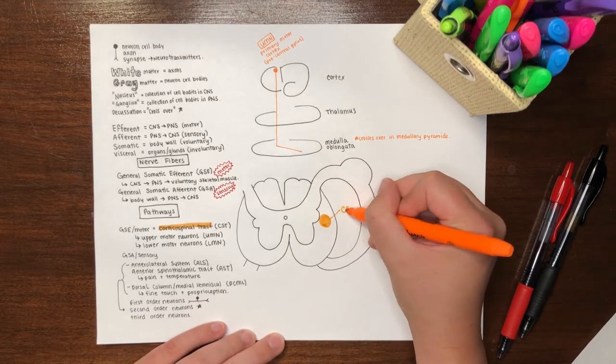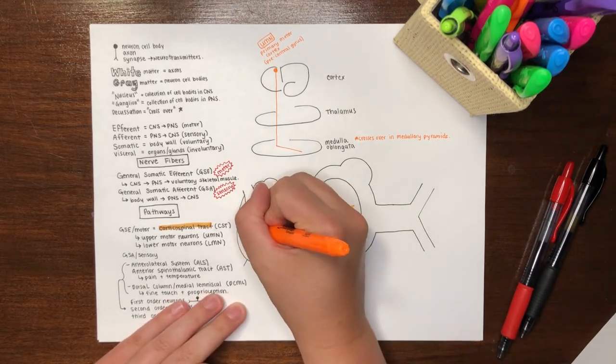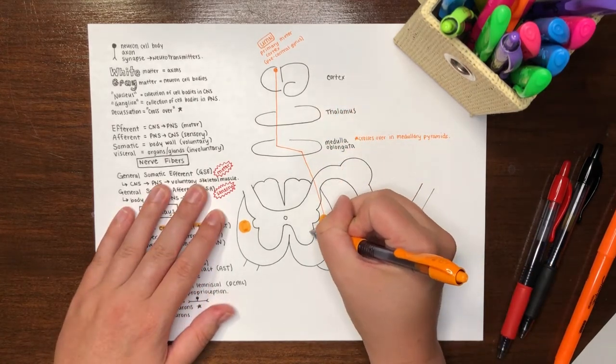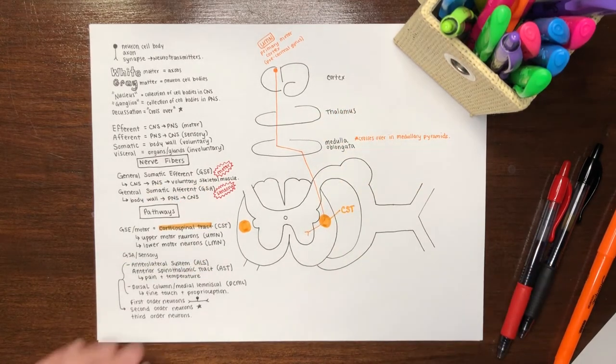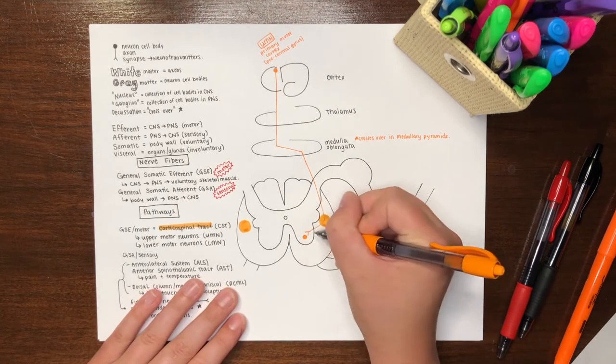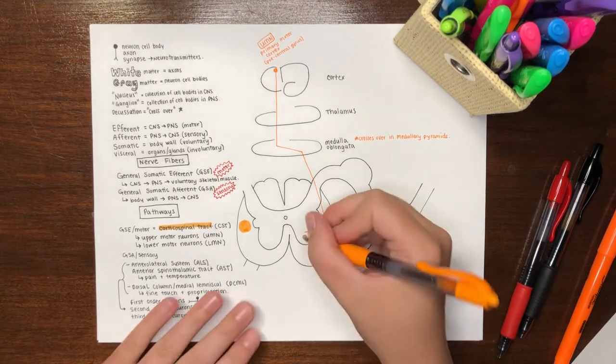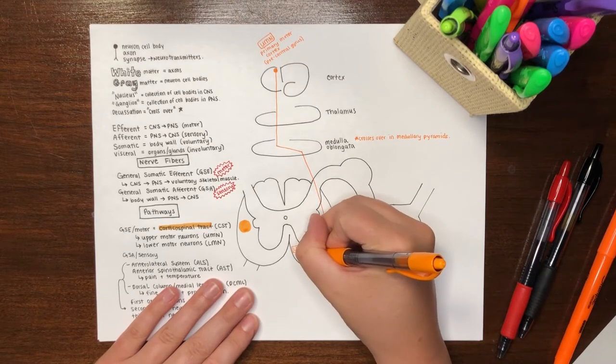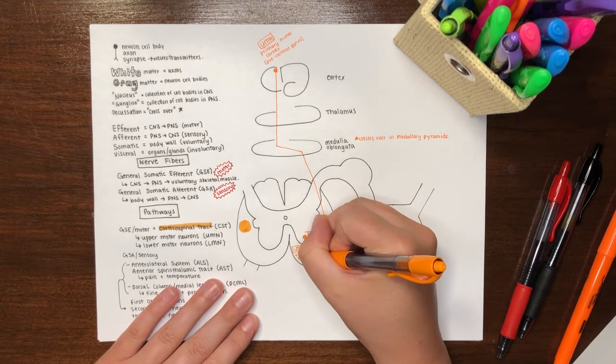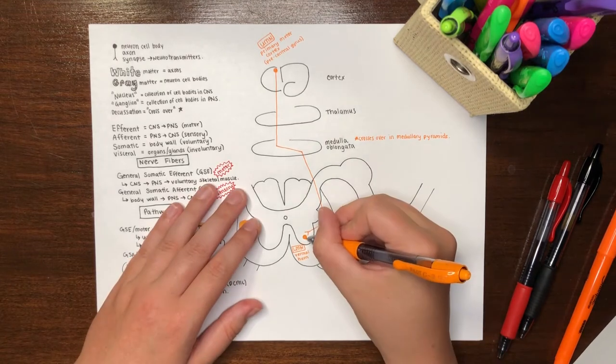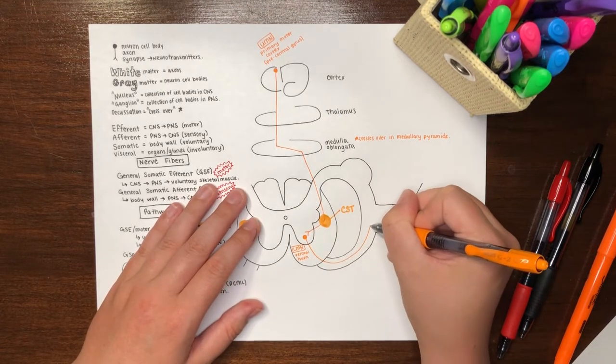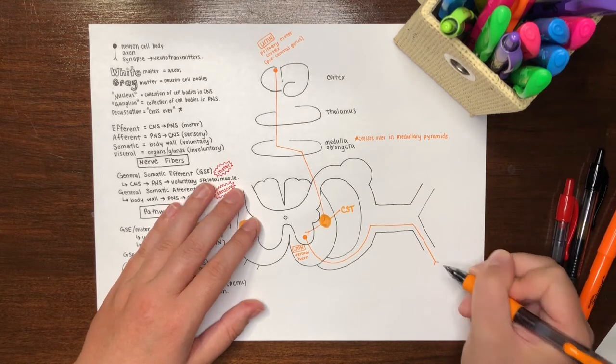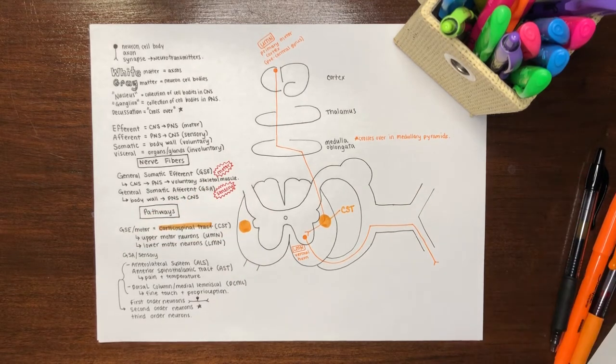The signal will then continue down the contralateral spinal cord traveling down the corticospinal tract until it reaches the desired spinal cord level. At this point, it will leave the tract and synapse on lower motor neurons in the ventral horn of the spinal cord. Lower motor neurons leave the spinal cord through the ventral root, to the spinal nerve, and out through the ventral and dorsal rami to find their target skeletal muscle tissue.